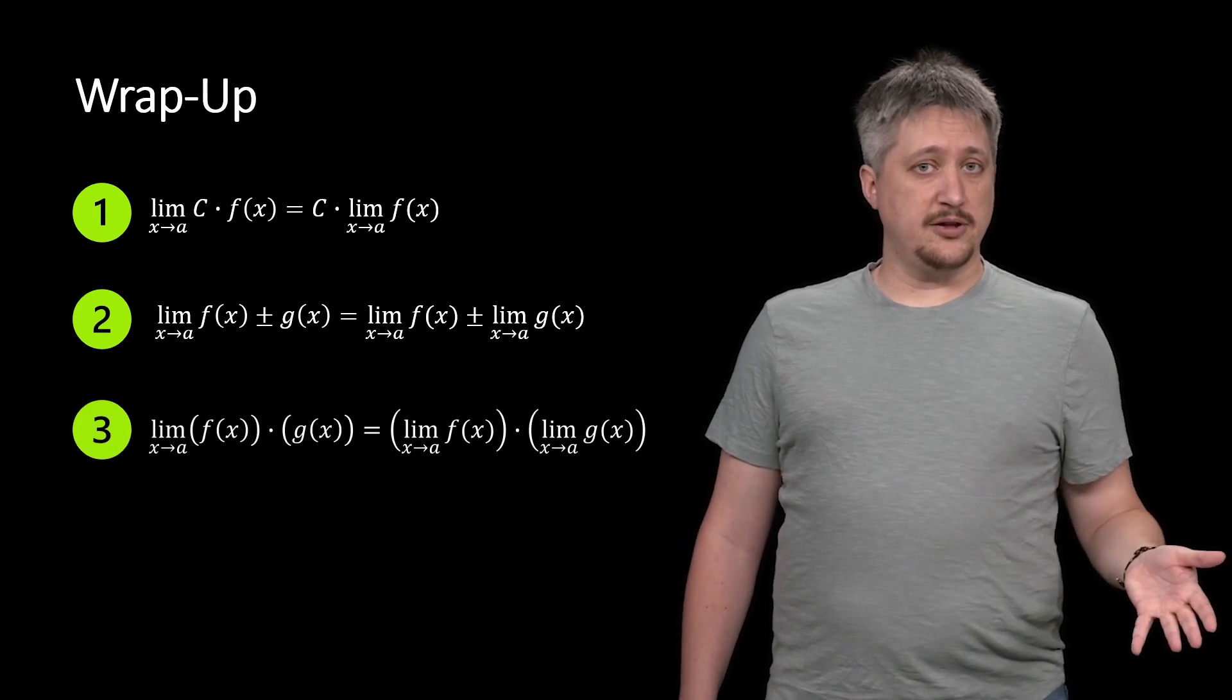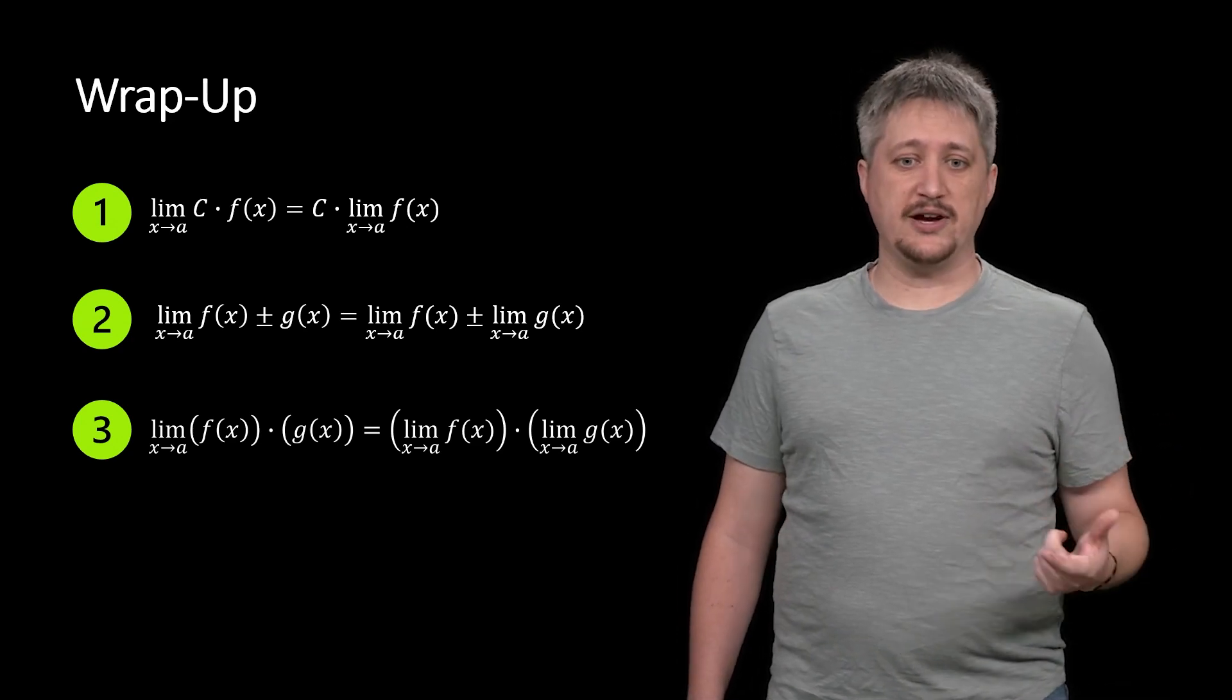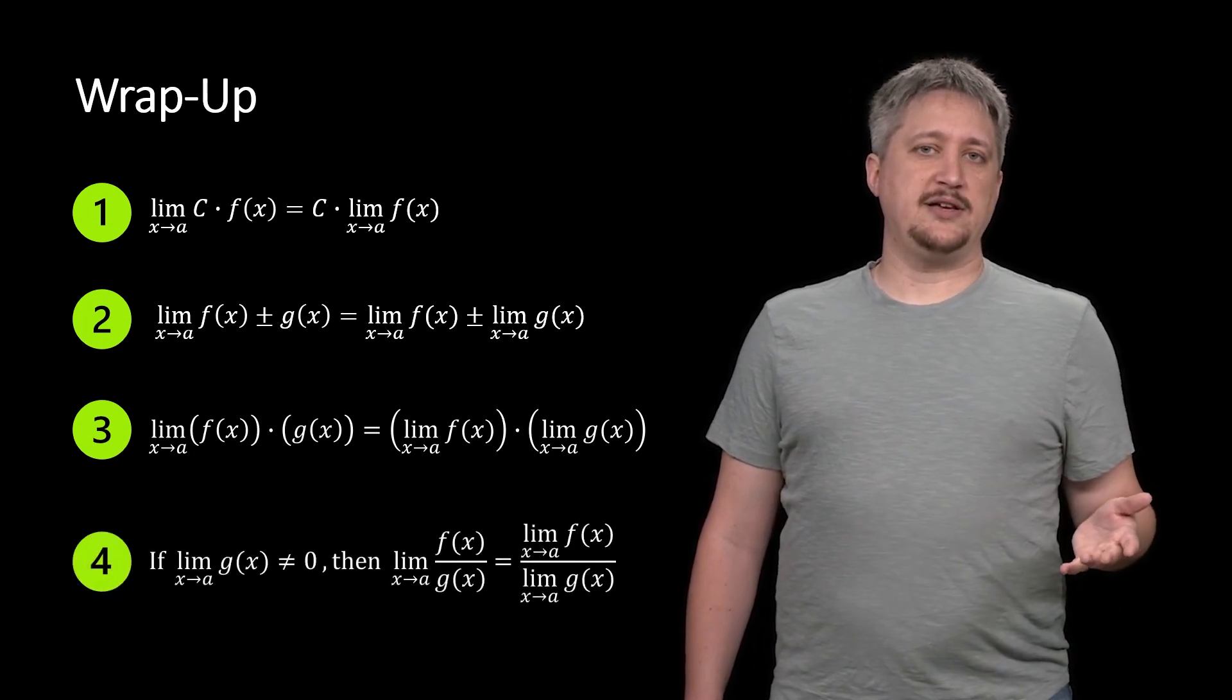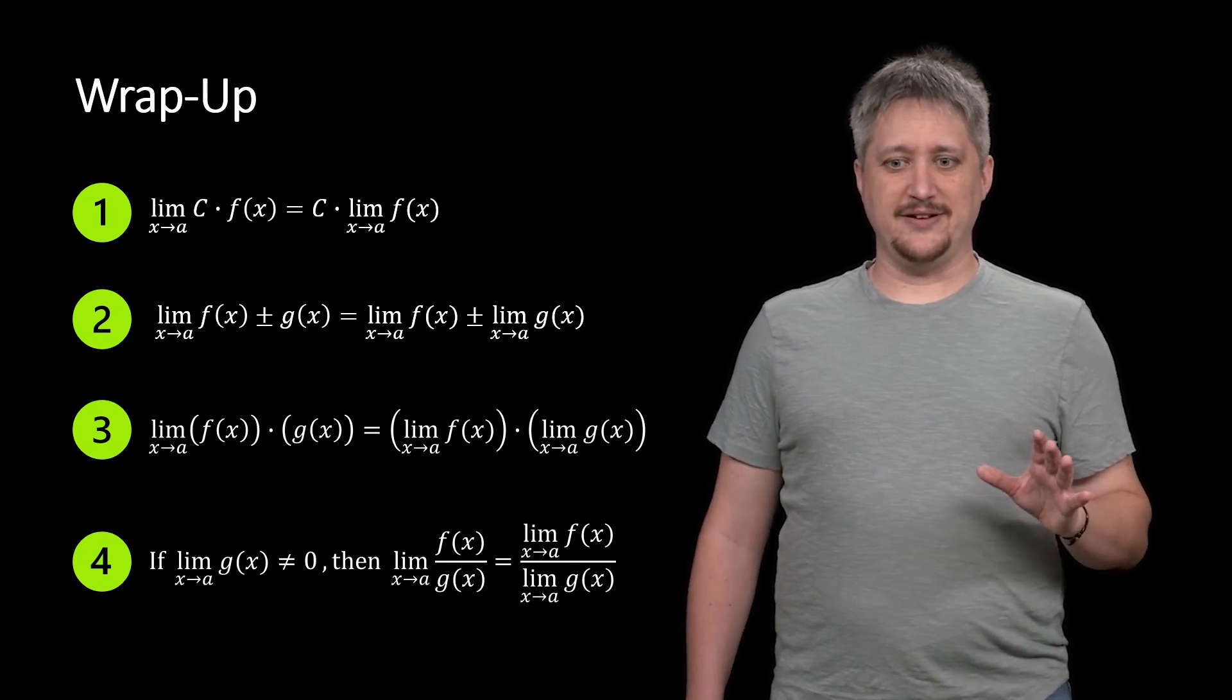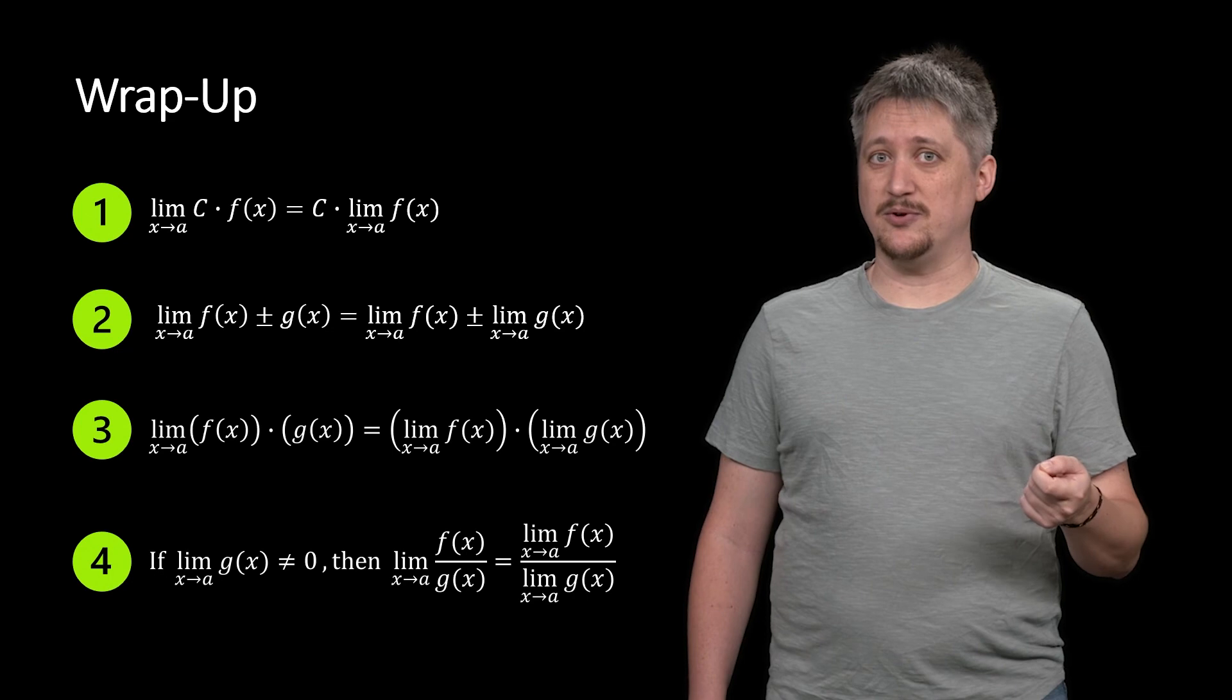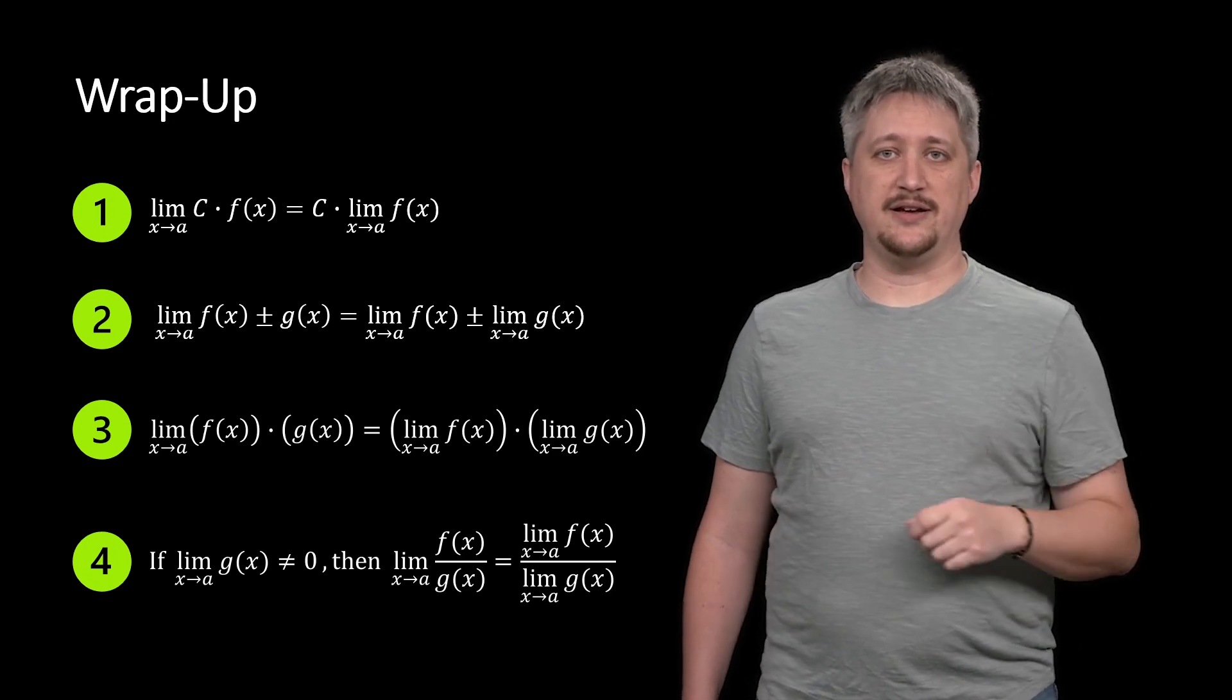The third one we did was the product rule. This one was the first where graphically it seems weird, but it still works. If you have the limit of a product, you can break it up and do the limit of each of them and then take the product. Finally, we have the quotient rule with the knowledge that the quotient here introduces this extra condition that you need g(x) to not be zero at the point, otherwise nothing is going to make sense. So as long as g(x) isn't zero at that point, you can go ahead and do the limit independently.